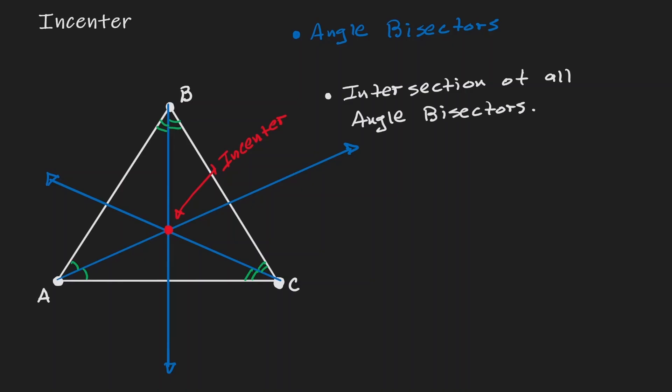Now let's talk about some properties that this point has. The first property is that the incenter always occurs inside the triangle. The second property, which is the most important one, is the meaning of this point.